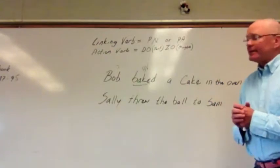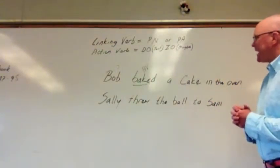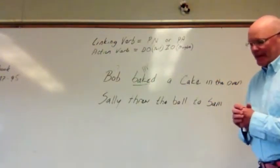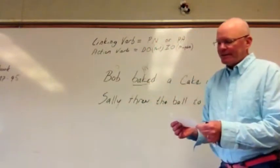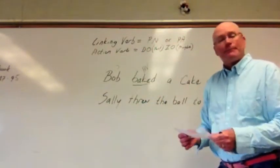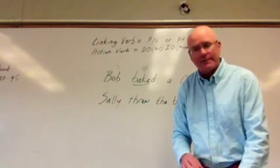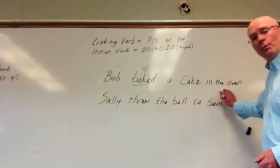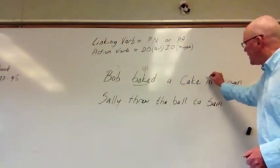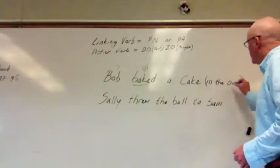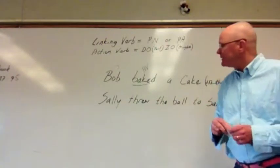First off, we look at our first sentence: Bob baked a cake in the oven. If you look at your directions, step number one says isolate the prepositional phrases and then cross them out. We have one prepositional phrase — in the oven — and we'll cross that out, then look at the rest of the sentence.